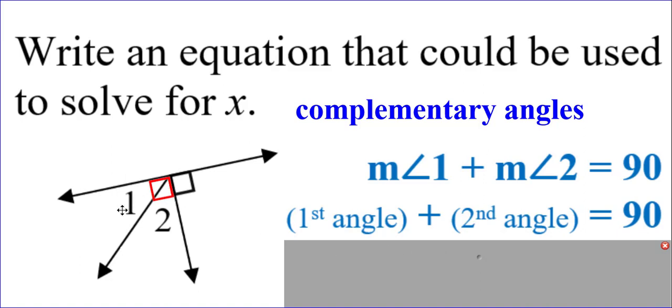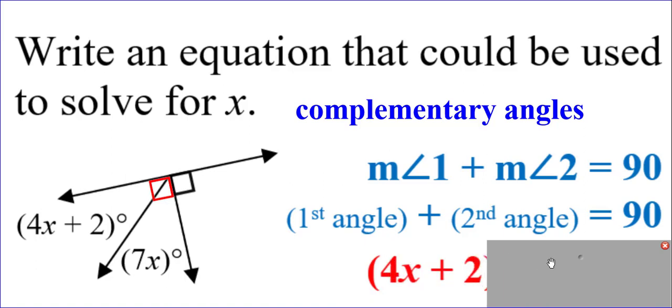Now let's put it back to what they originally were called. Instead of angle 1, it was 4x plus 2. Instead of angle 2, it was 7x. The same math still applies. The first angle, 4x plus 2, plus the second angle, 7x, will equal 90 degrees. And there you go. There's an algebraic equation for this situation.